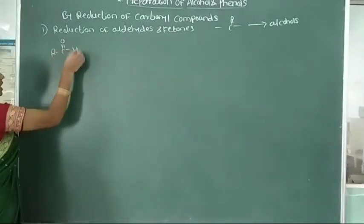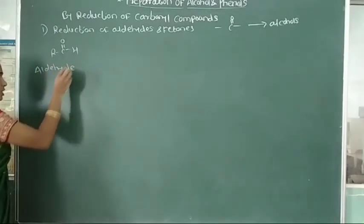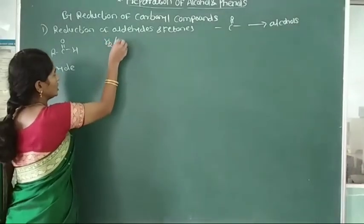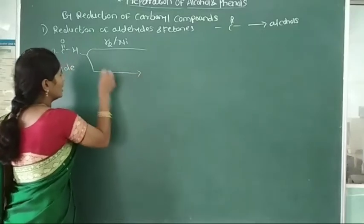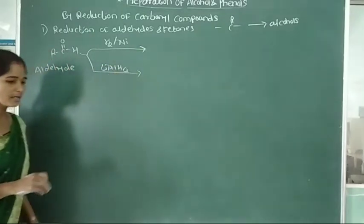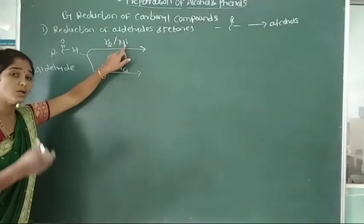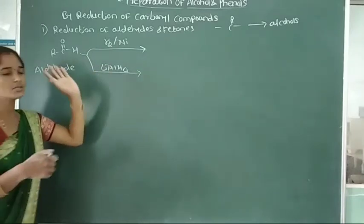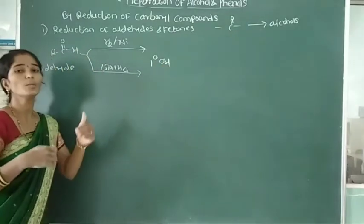RCHO — it is called as aldehyde, this is the general form of aldehyde. RCHO reacts with hydrogen in presence of nickel catalyst or lithium aluminium hydride. This aldehyde is reduced with hydrogen in presence of nickel catalyst or lithium aluminium hydride, and it is converted into primary alcohol.